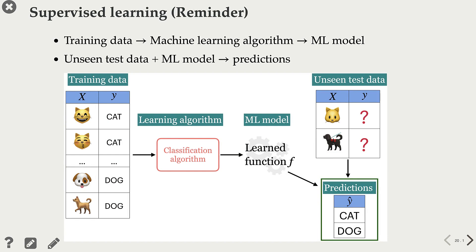Recall that in supervised machine learning, we are given training data in the form of X and Y. What we want to do is find this mapping function f that relates X to Y. Once we have the mapping function, we can use it to predict targets of new examples.